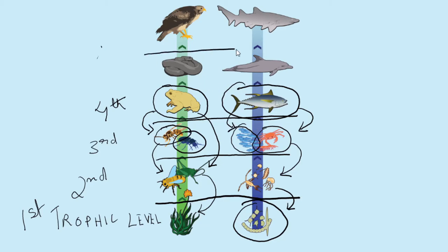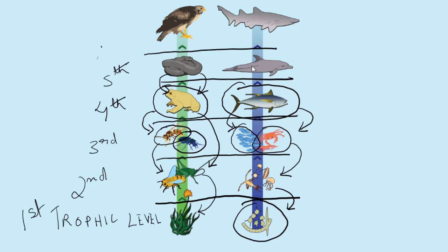At the fifth trophic level in both food chains: in the grassland ecosystem a species of snake preys upon the frog or toad, and in the marine ecosystem a dolphin preys upon the tuna. At the same time, the dolphin may occupy the fourth trophic level and be directly dependent upon crustaceans or small fishes.